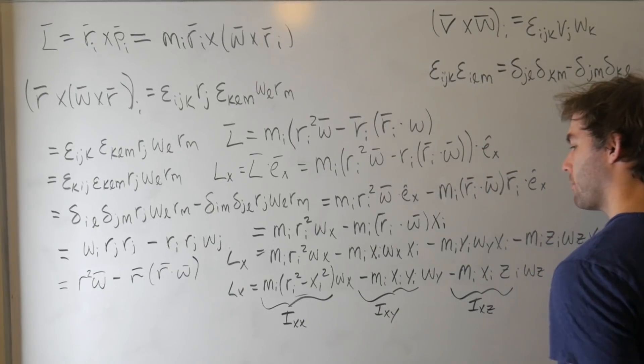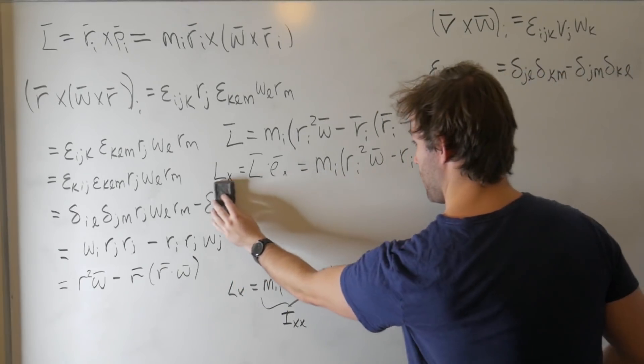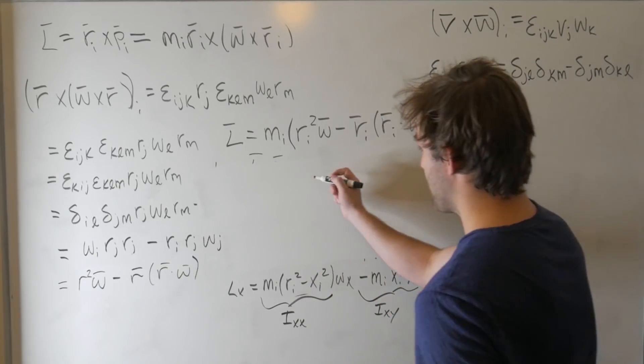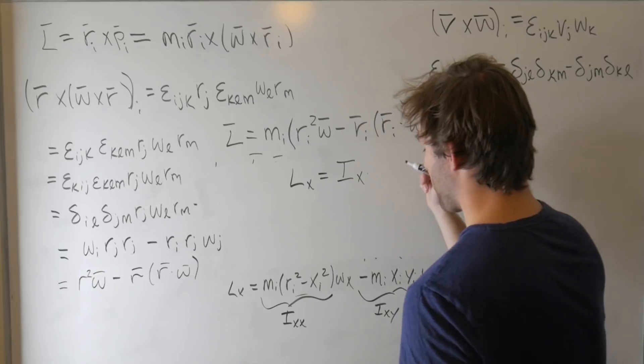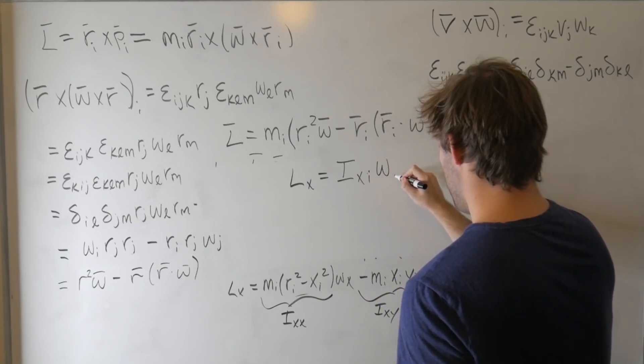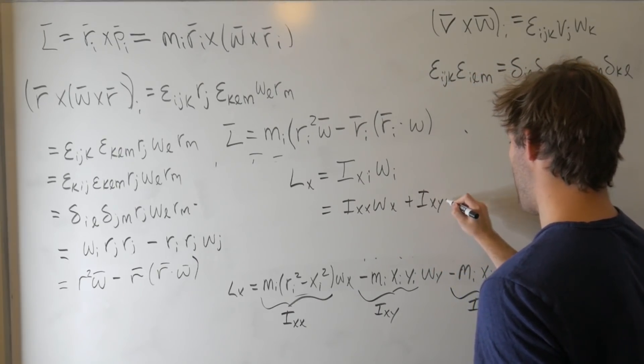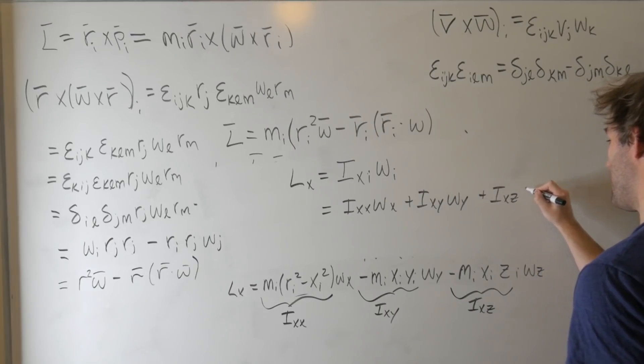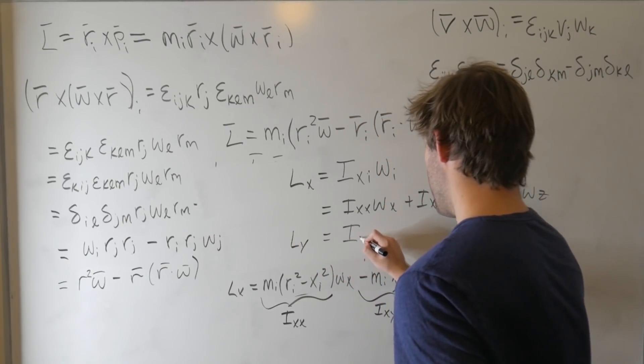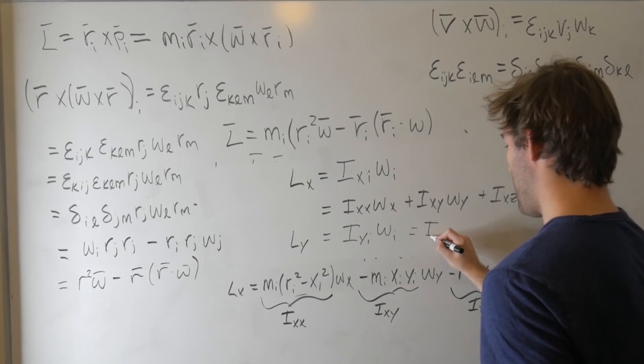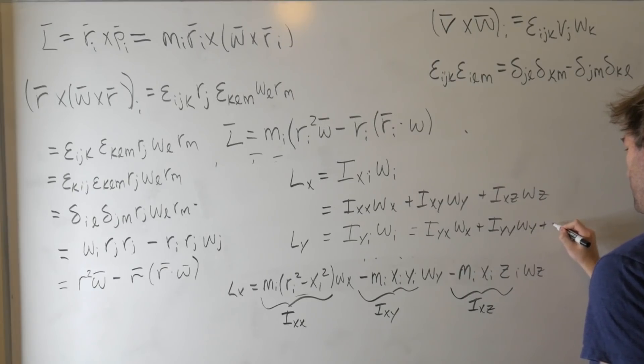We would have had a very similar behavior for the other components. But this allows us to simplify our equation a bit to, now we can just say that L_x is equal to sum over i of I_xi omega_i. So if we were summing over i, this gives us I_xx omega_x plus I_xy omega_y plus I_xz omega_z, which is exactly what we have here. And then if we were to want to do the L_y component, that would just give us I_yi omega_i. Which would give us I_yx omega_x.